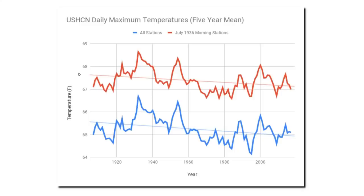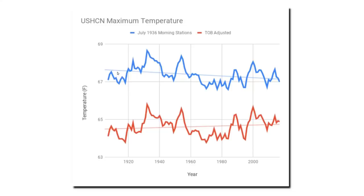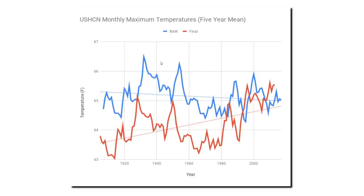The United States Historical Climatology Network has a lot of stations and we don't need to use all of them. Observers who reset their thermometers in the morning generally lived at warmer locations, while observers in colder locations are more likely to reset in the afternoon. In this graph, I compare the trend of the morning stations with the trend from the time of observation bias adjusted temperatures. The morning stations show a cooling trend, and they're not subject to the issues used to justify the TOB adjustments. The cooling trend in the non-suspect data tells me the warming trend in the adjusted data is probably incorrect.